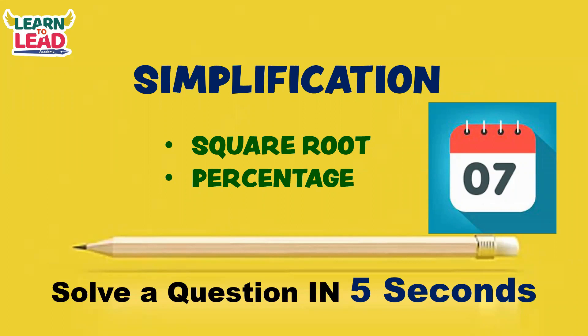We have a 100-day batch starting. In Day 7 we discussed simplification. In simplification, we discussed the concept of square root and percentage. For the percentage, we have 70% of the topics. Percentage-based questions involve 4-digit numbers and 3-digit numbers, and these simplification problems will be solved.